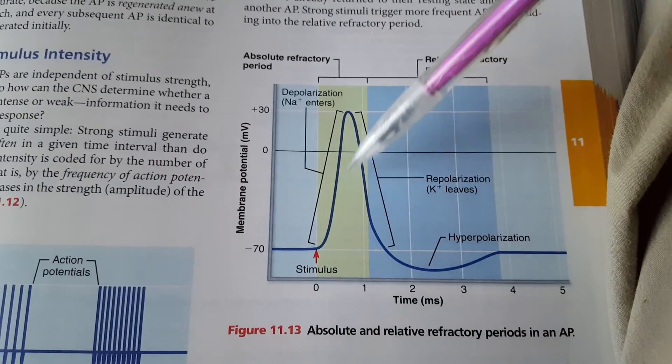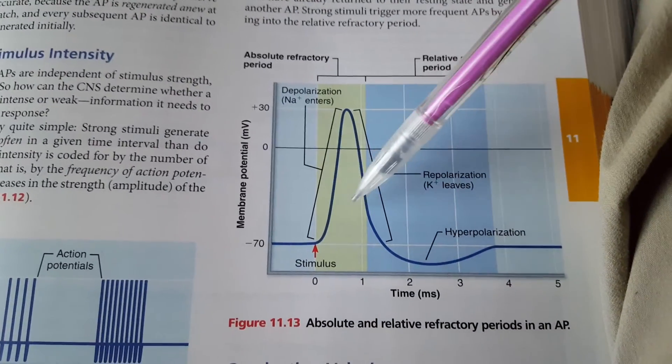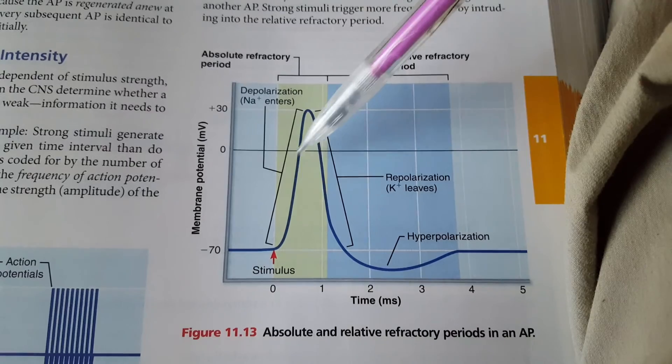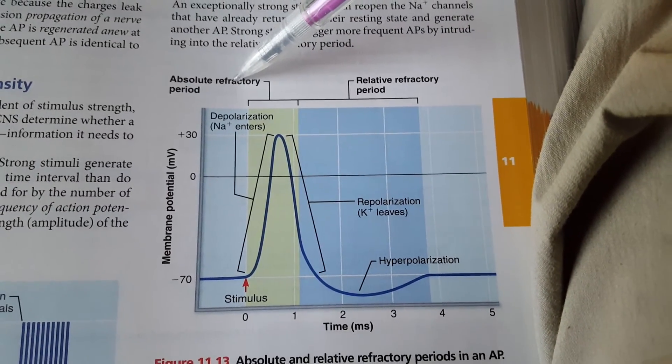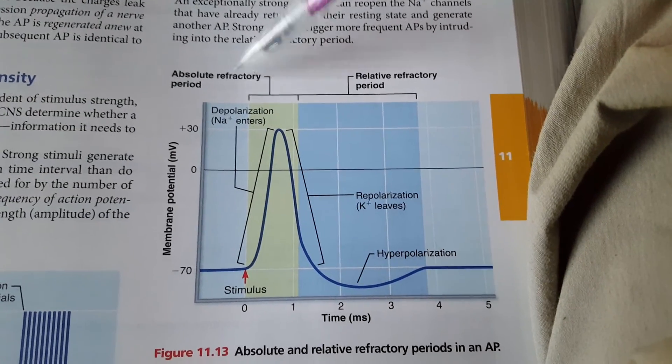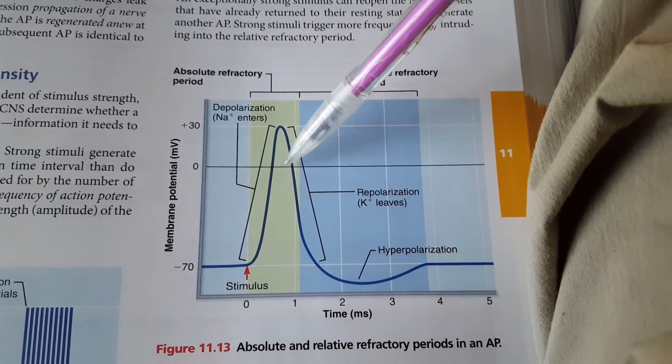But in this green area, because the membrane is insensitive to any further stimulus, we call this the absolute refractory period. Absolutely no way are you going to get another action potential.